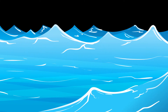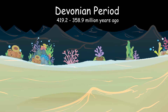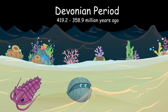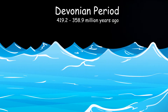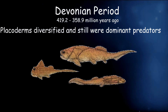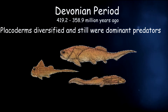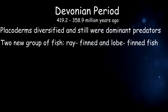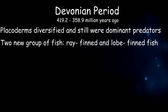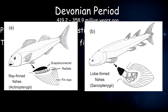The fourth period is the Devonian Period. There was extensive reef building in shallow water, which contained numerous brachiopods, trilobites, and horn corals. Placoderms also diversified and stood as the dominant predators. The fossil record also showed that there were two new groups of fish that had developed bones, teeth, swim bladder, and gills — these were ray-finned fish and lobe-finned fish.